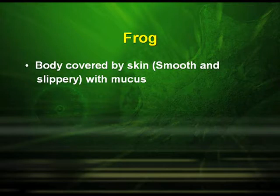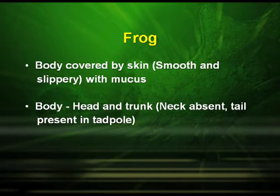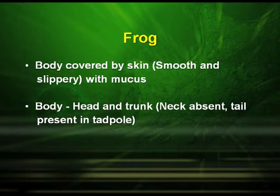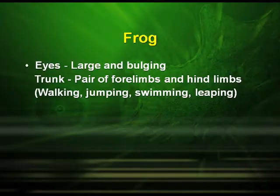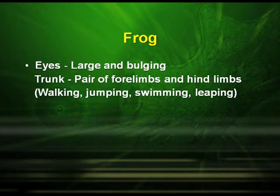We will move on to the next organism, frog, which comes under Amphibia. The body of the frog is covered by smooth and slippery skin with mucus, and the body is divided into head and trunk. The neck is absent, and a tail is present only in the tadpole stage. Above the mouth there is a pair of nostrils, and the eyes are large and bulging. The trunk has a pair of forelimbs and hindlimbs used for walking, jumping, swimming and leaping.